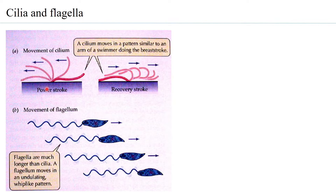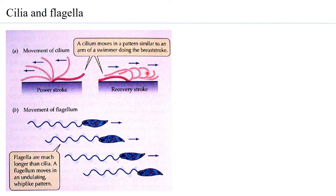Cilia are particularly short extensions. When they push the surrounding medium, they propel the cell forward — this movement is the power stroke. When the cilium comes back, that is called the recovery stroke. Both flagella and cilia carry out a power stroke and a recovery stroke, and this alternating action produces movement.